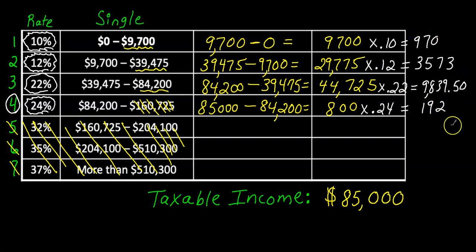And now what I'm going to do is add up all these numbers and that's how much I owe. I'm going to add these all up. All these numbers here in white. So $970 plus $3,573 plus $9,839.50 plus $192 and I get a whopping $14,574.50.